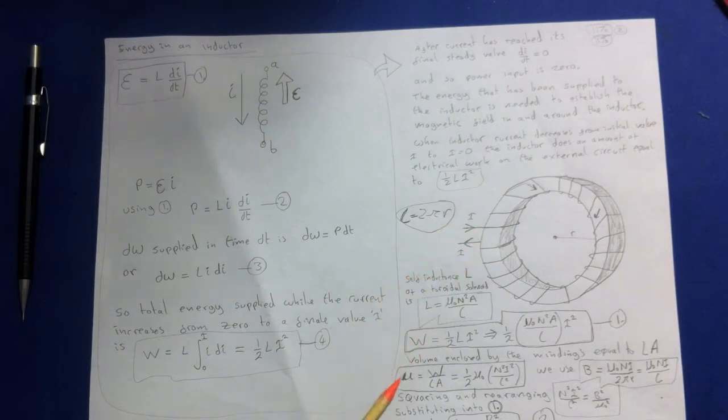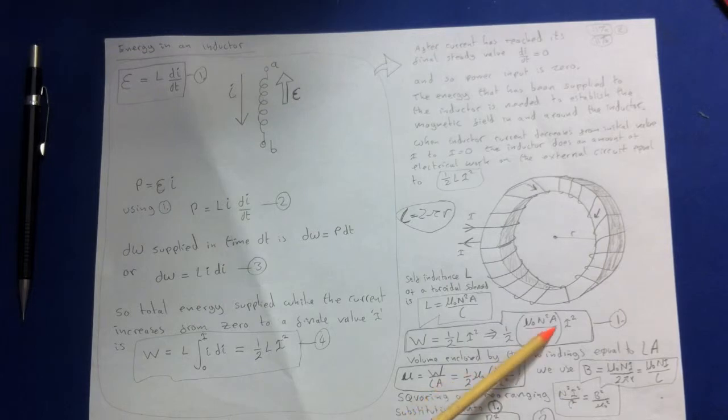Then we can write u equals the energy per unit volume, which is W over LA. Once we substitute in this W term here, we end up with a half μ₀ N I squared, I squared over L squared. The A's have basically cancelled there. And we're still using L here. We're not using the 2πR.